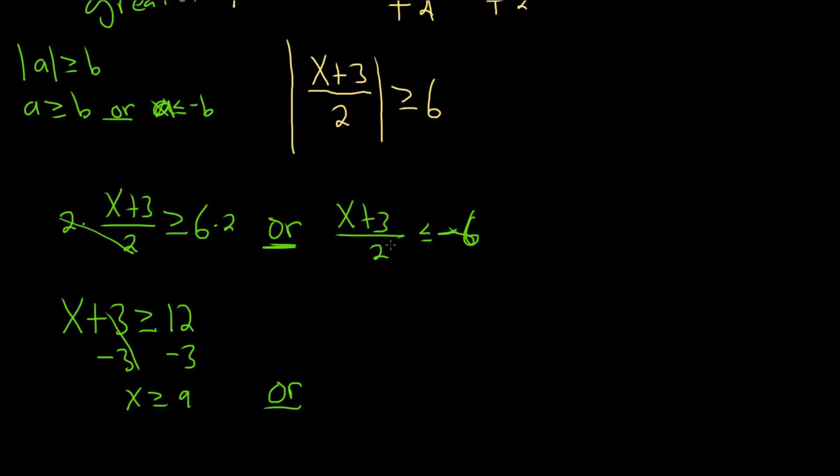Or, same thing here, multiply by 2, multiply by 2. So we have x plus 3 less than or equal to negative 12. And then subtract 3, subtract 3. x less than or equal to negative 15.